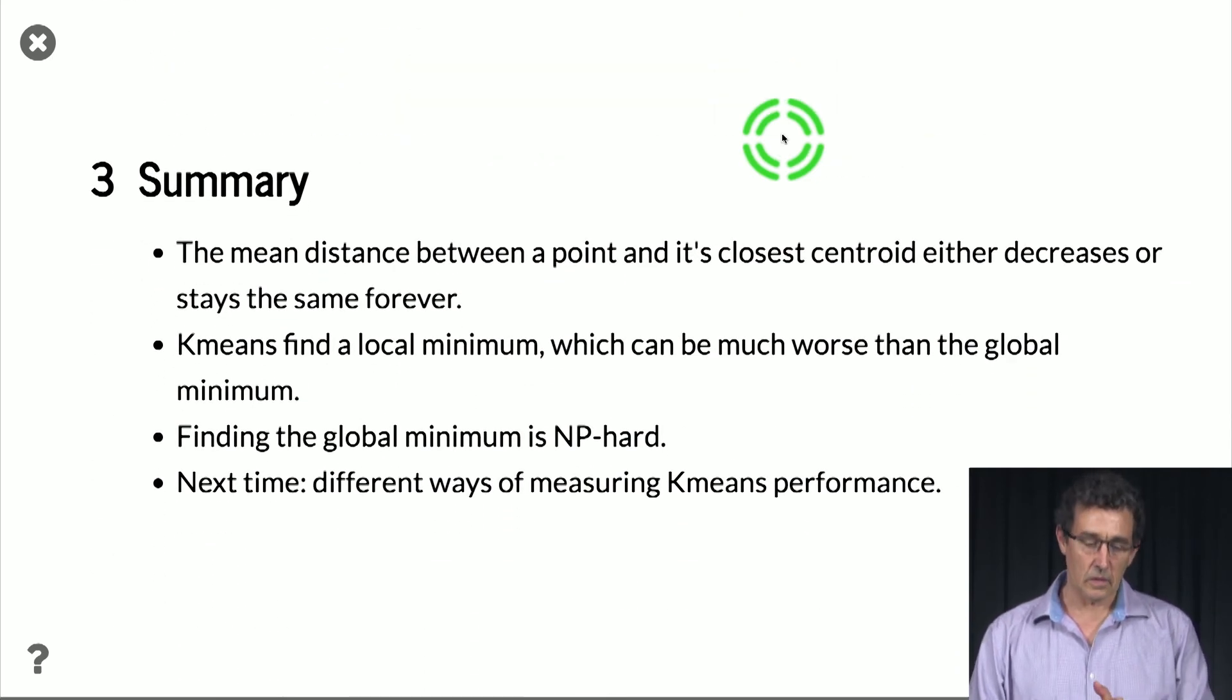So to summarize, the mean distance between point and its closest centroid either decreases or stays the same forever. So this is a nice property of k-means, and this is what we're going to look at when we're now going to analyze it. And k-means finds a local minimum, which can be much worse than the global minimum. And finding the global minimum is actually very hard. We have no algorithm to even approximate it.